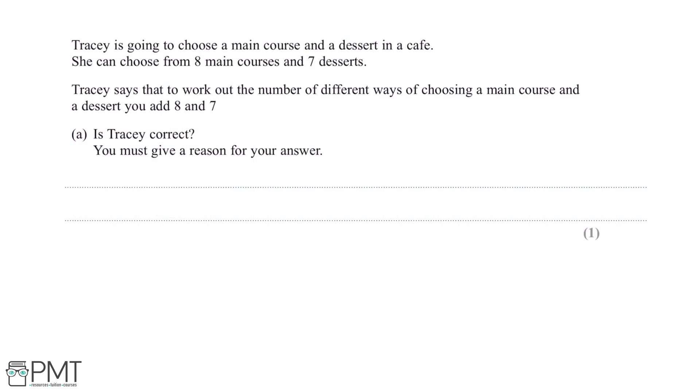Tracy is going to choose a main course and a dessert in a cafe. She can choose from eight main courses and seven desserts. Tracy says that to work out the number of different ways of choosing a main course and a dessert, you add eight and seven. Is Tracy correct? You must give a reason for your answer.